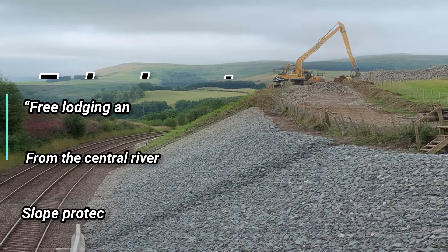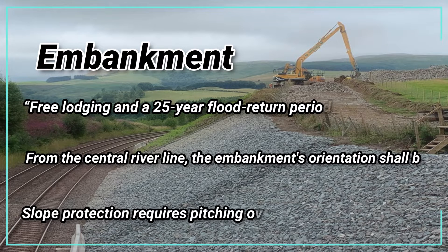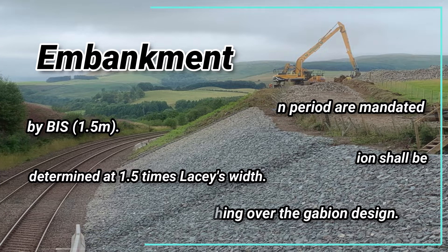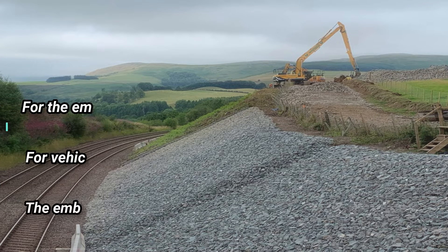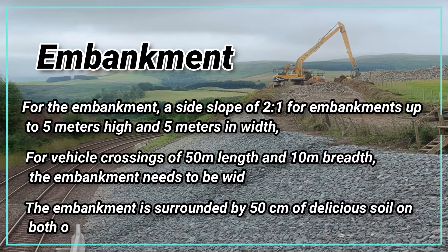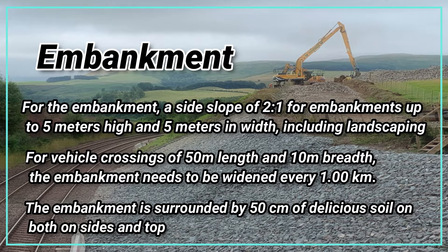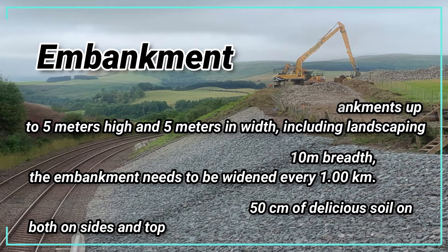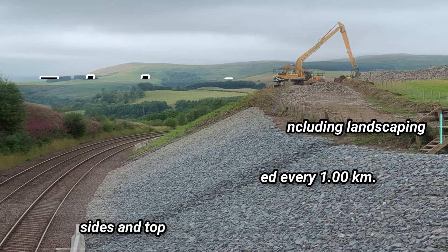A 25-year flood return period and 1.5 meters freeboard are mandated by BIS. From the central river line, the embankment's orientation shall be determined at 1.5 times the lace width. Slope protection requires pitching over the gabion design. For embankments up to 5 meters high, a side slope of 2:1 and 5 meters width including landscaping is required. For vehicle crossings of 50 meters length and 10 meters breadth, the embankment needs to be widened every 1.00 kilometers. The embankment is surrounded by 50 centimeters of topsoil on both sides and top.